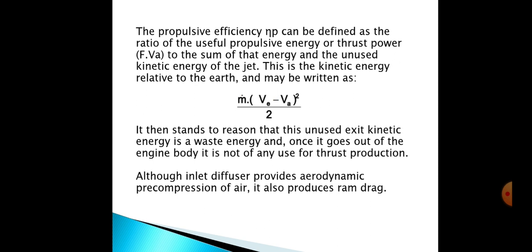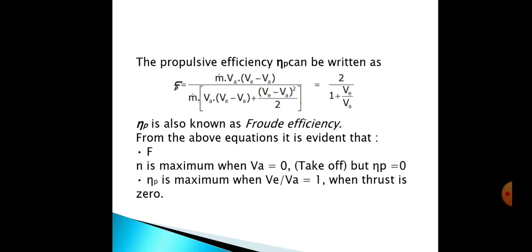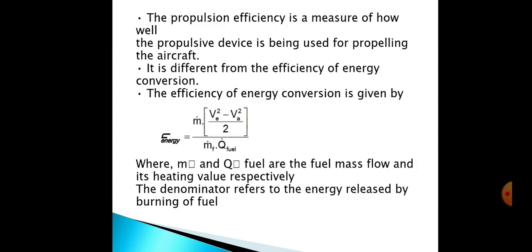The propulsive efficiency ηp can be written as ηp = ṁVa(Ve - Va) / [ṁVa(Ve - Va) + (Ve - Va)²/2], which simplifies to 2 / (1 + Ve/Va). ηp is also known as Froude efficiency. From the above equations it is evident that Fn is maximum when Va = 0 (takeoff), but ηp = 0. ηp is maximum when Ve/Va = 1, when thrust is zero.